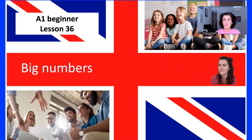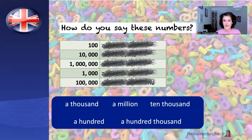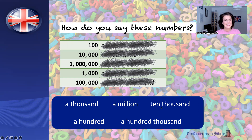Hello and welcome to this A1 Beginner Lesson 36 with me Kate. Today we're going to be looking at big numbers. So let's have a look at these numbers. We've got some possible answers here: a thousand, a million, ten thousand, a hundred, and a hundred thousand. How do we say these numbers? Choose one of these options.